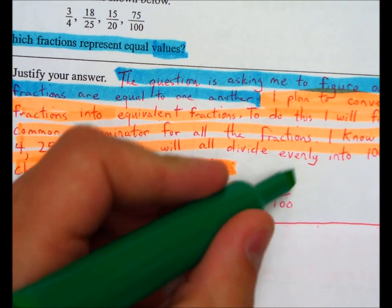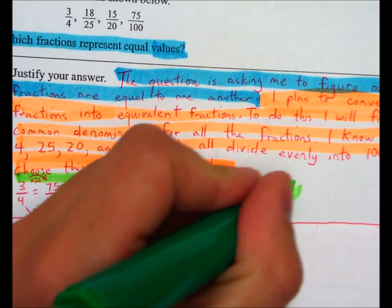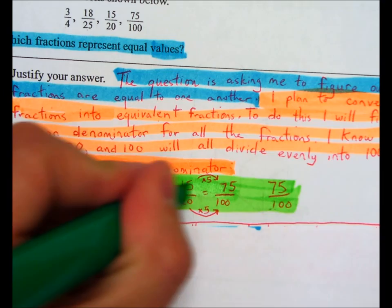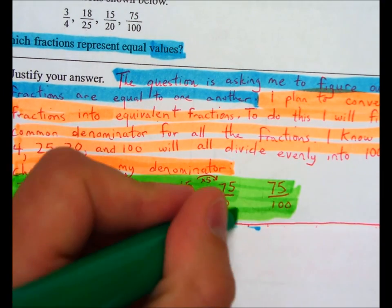So step three I'm going to outline in green or highlight in green, I should say. So this is my step three. This is me showing my work, showing how I got the answer using the plan that I described.